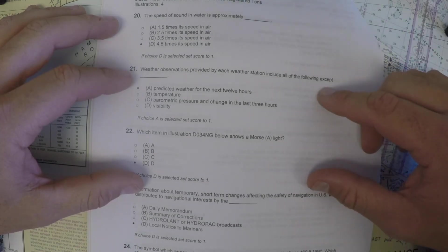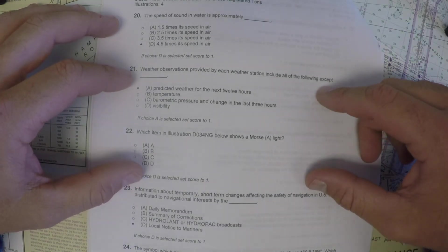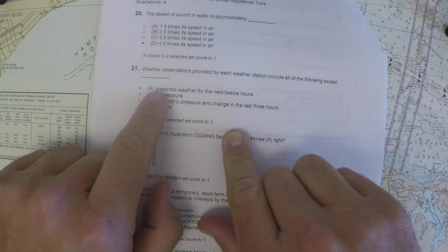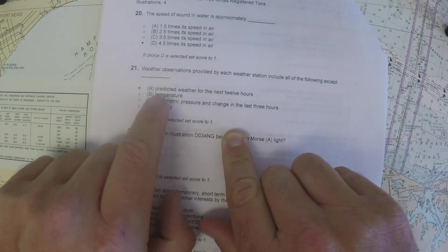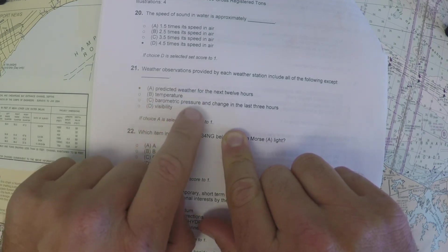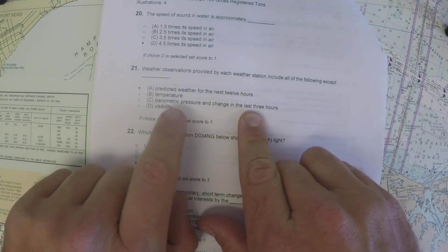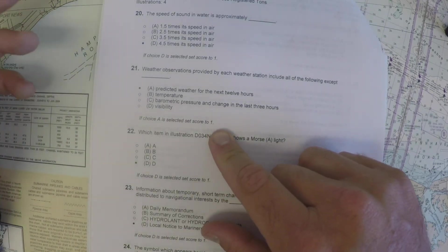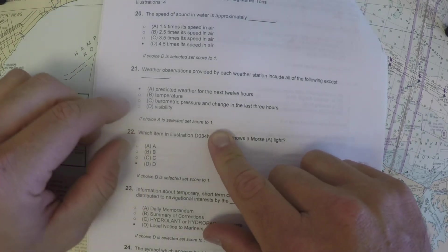Good there. Number 21, weather observations provided by each weather station include all of the following except. So looking at the answers, it's something having to do with the future and then temperature, barometric pressure and change in the past and visibility.